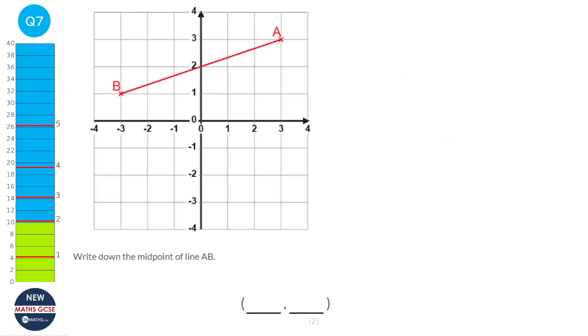The midpoint of a line is just the halfway point of the line. We can see that the halfway point is here, and the coordinates of that point are (0, 2).